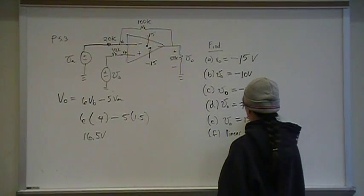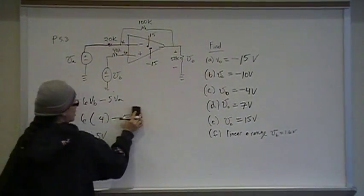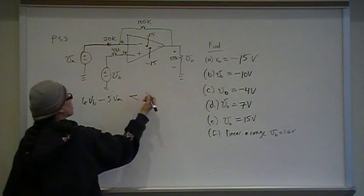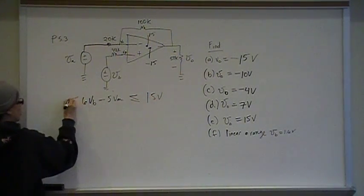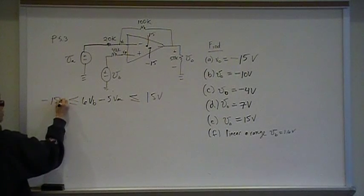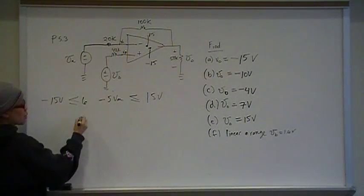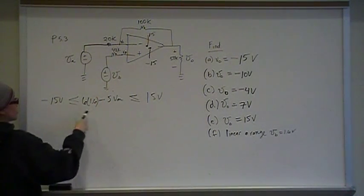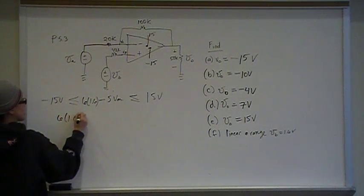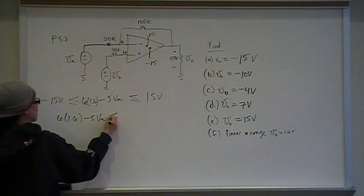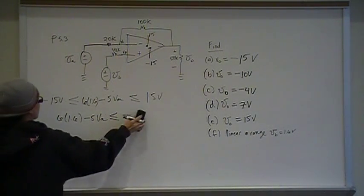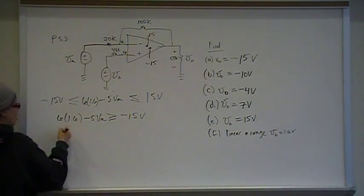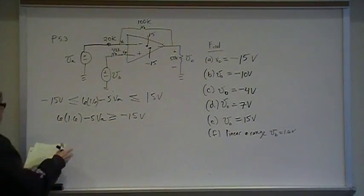Now we're looking for the linear range if VB is 1.6 volts. Linear range is going to be greater than or equal to negative 15 volts and less than or equal to 15 volts. We're taking VB to be 1.6, so now we just need to solve these equations. So I have 6 times 1.6 minus 5 VA, that's going to be greater than or equal to negative 15 volts.